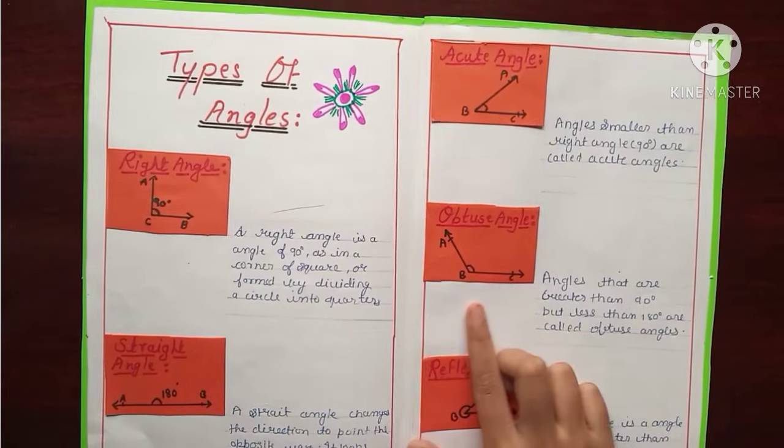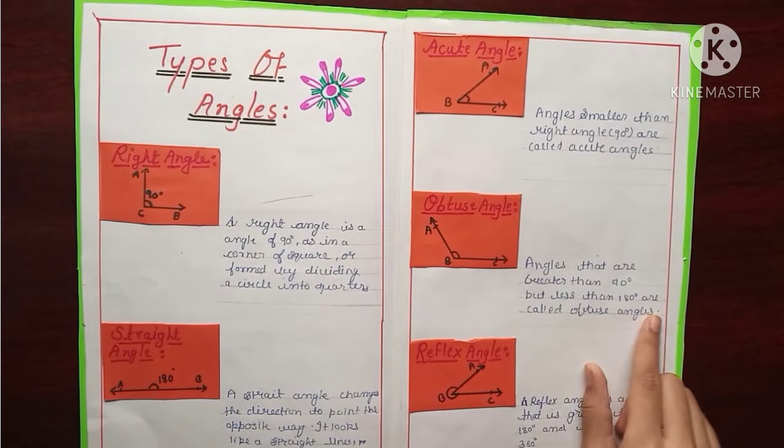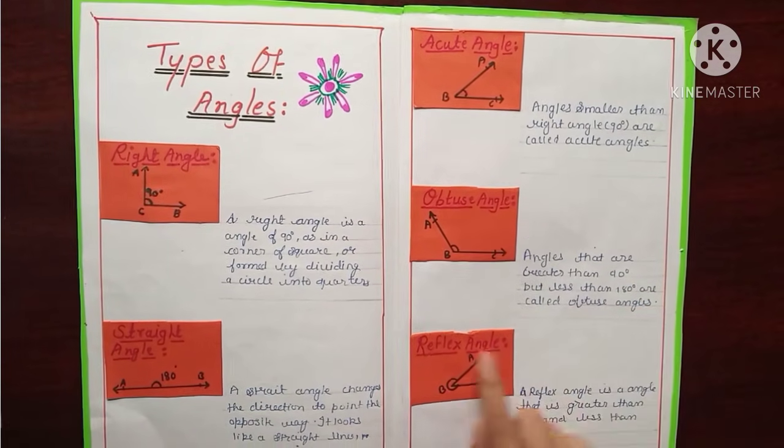Obtuse angle. Here is obtuse angle. Angles that are greater than 90 degree but less than 180 degree are called obtuse angles. And reflex angle.